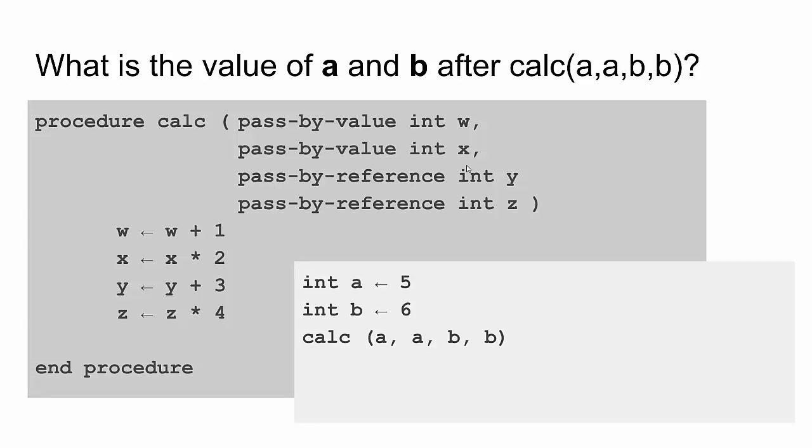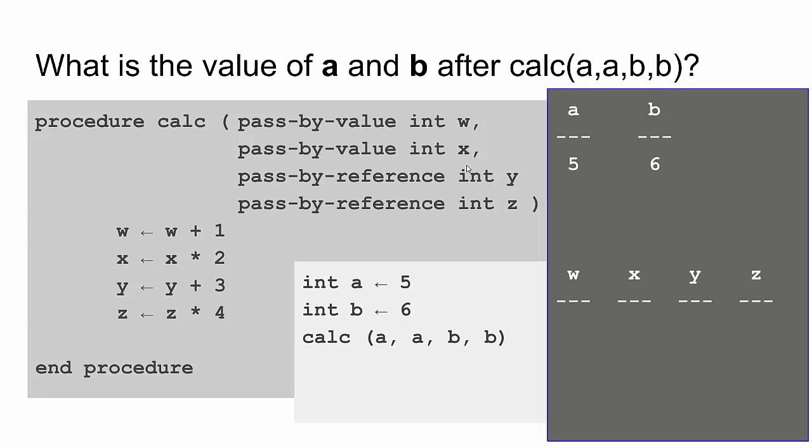So I've just copied the problem over into my presentation software so it's easier for me to manage. And what does our scratch paper look like? Well, we have a and b, which are 5 and 6. And then we're calling calc a, a, b, b for values w, x, y, and z. Because a has a value of 5 and it's being passed by value into w, we simply copy a 5 down into w. Because a is passed by value again into x, we're going to copy another 5 into x. Because y is getting the value for b, we're going to pass a reference to b into y. And z is also getting a reference to b. So y and z actually point to the same place, which is letter b. W and x have two copies, each of their own copy, of the value 5 that came from a.